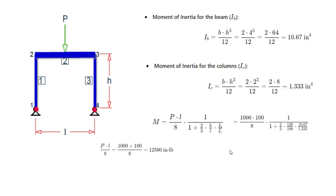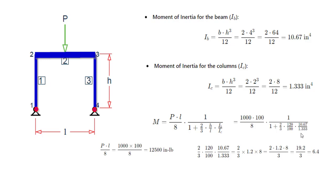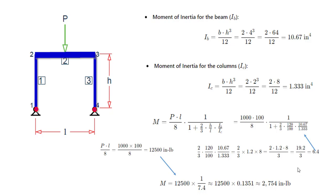For the next term, working out the calculation separately, you will get a value of 6.4. So 12,500 into 1 divided by 1 plus 6.4 — the parameter becomes 1 upon 7.4, since 1 plus 6.4 equals 7.4. Incorporating these values, I'm getting the moment value of approximately 2754 pound-inches.